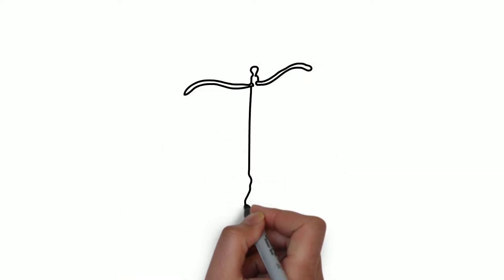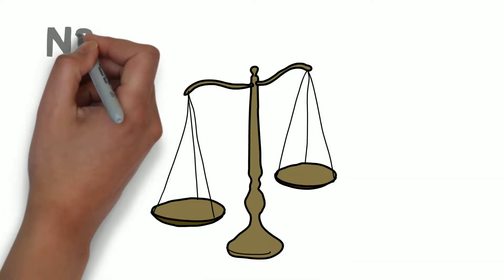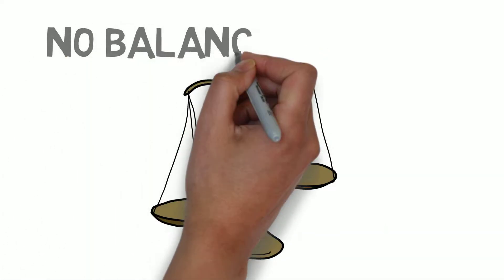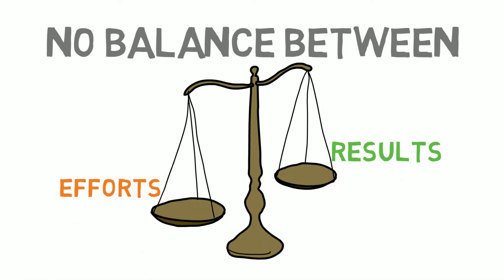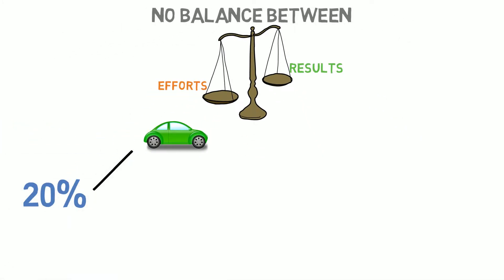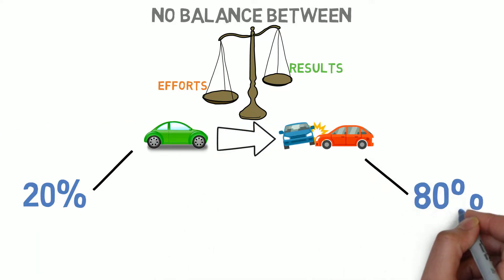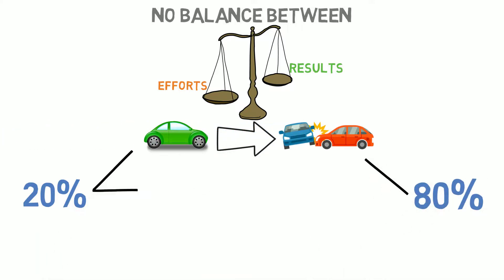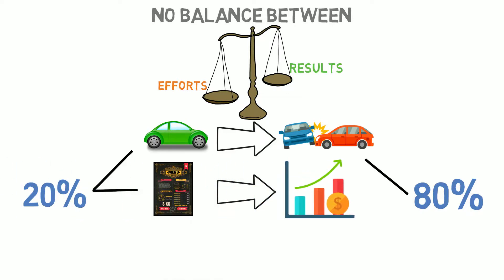This is the Pareto Principle, or 80-20 rule, and it is defined with the following concept: there is no balance between your efforts and your results. You can see that 20% of the drivers cause 80% of the accidents, or that 20% of the items on the menu of a restaurant represent 80% of the revenue.